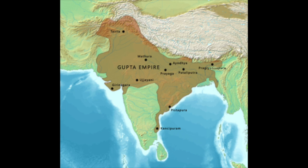Then, in around 320 AD, Chandragupta I — not to be confused with Chandragupta Maurya — expanded the empire's area significantly via a marriage, because who needs love when you can have political power?